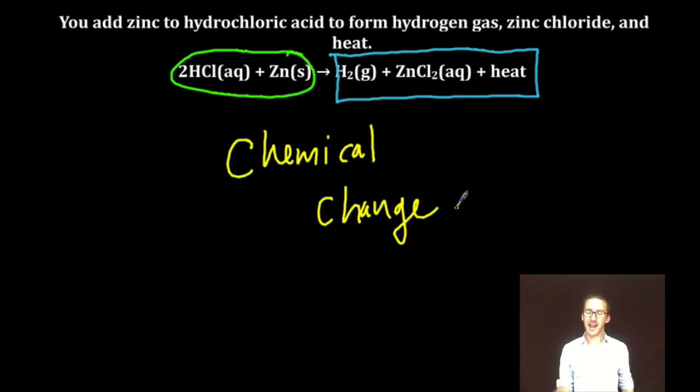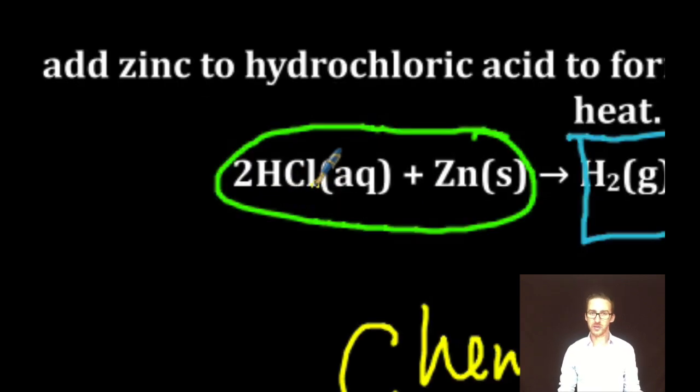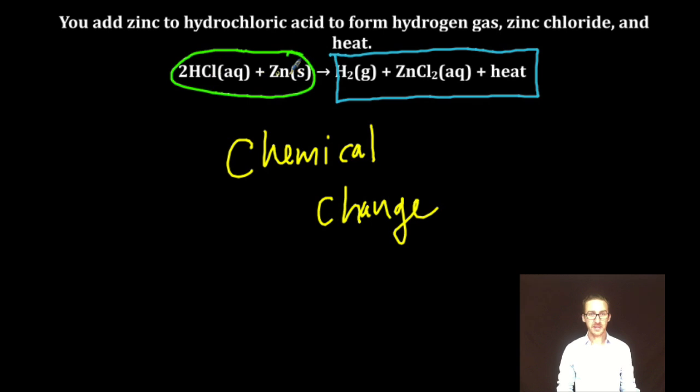Why? Has the identity of my reactants changed? Answer, yes. Here, hydrogen and chlorine are together in a compound. Here, zinc is by itself. These things are not bonded together because they are separated by a plus sign on the reactant side.